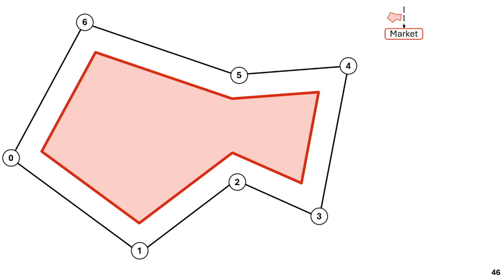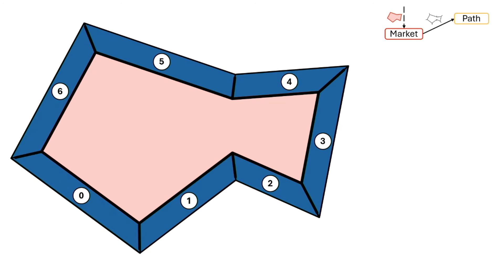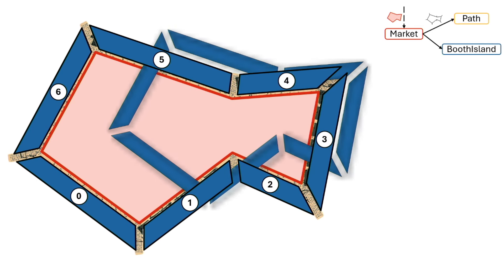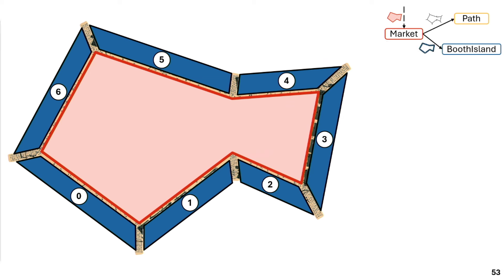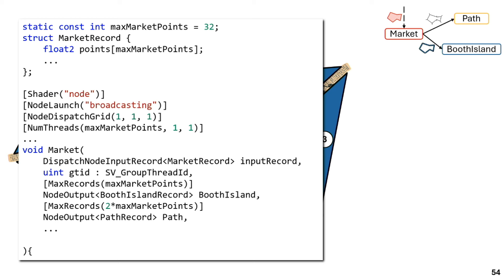After shrinking, we write records to a node called path to generate the paths for this first ring, make space for those paths, and write records for the booth islands. In code, we add outputs to our node for the path and booth island nodes.